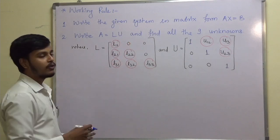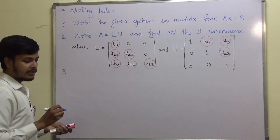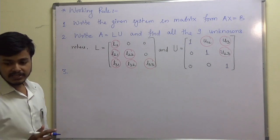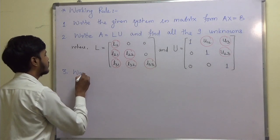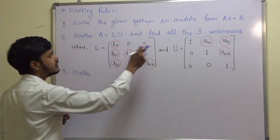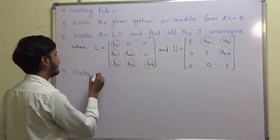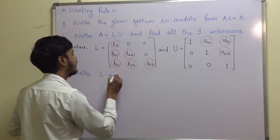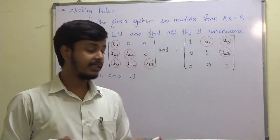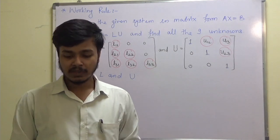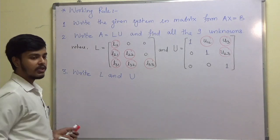The third step is: after finding out all 9 unknowns, you have to substitute all the values and write down the matrices L and U explicitly. Once you write L and U, that completes step number 3.